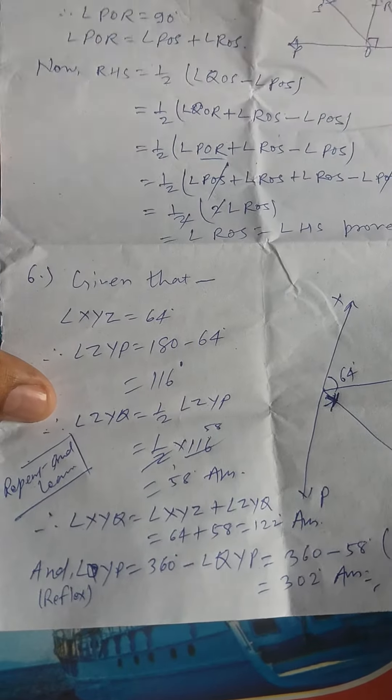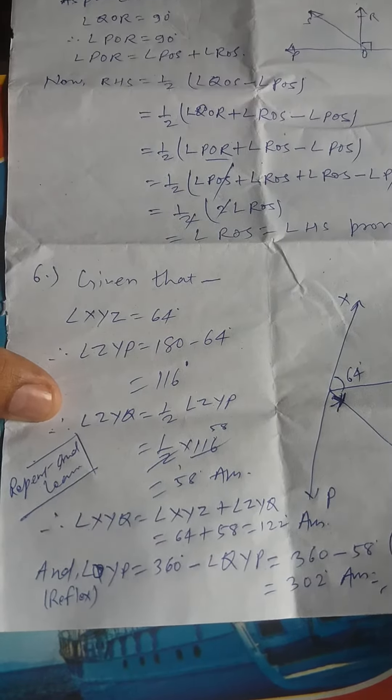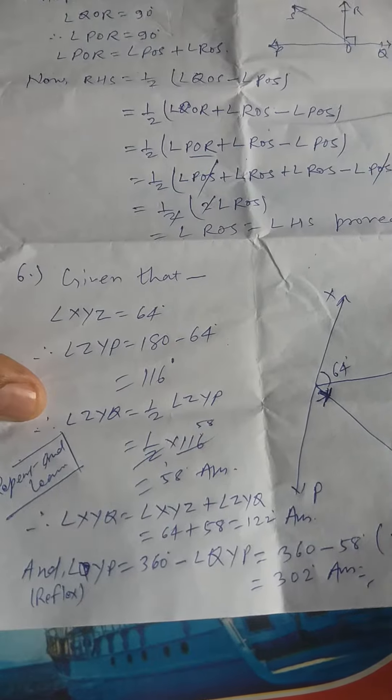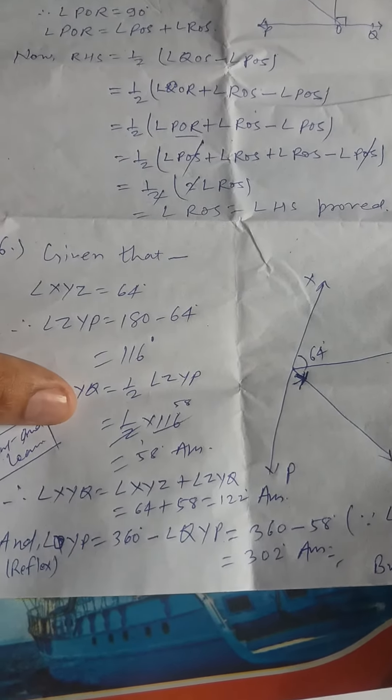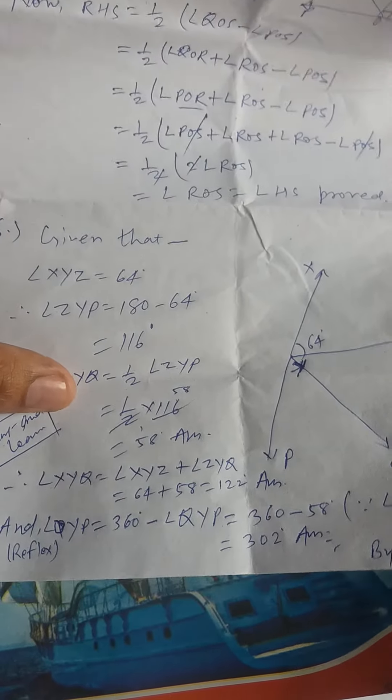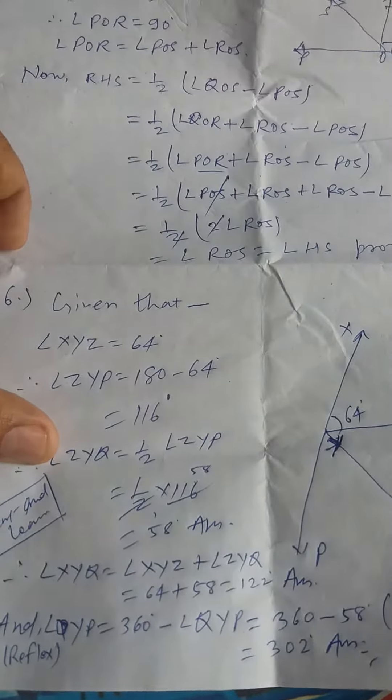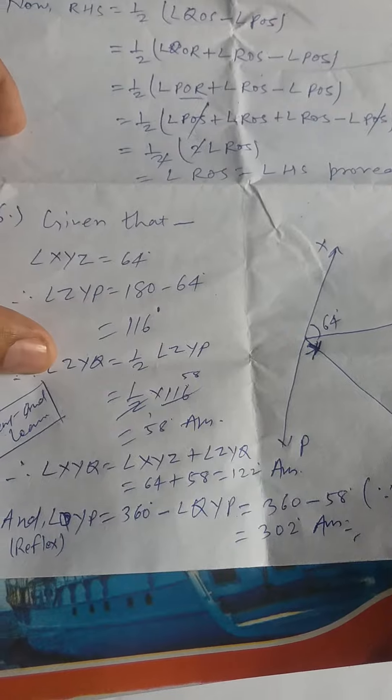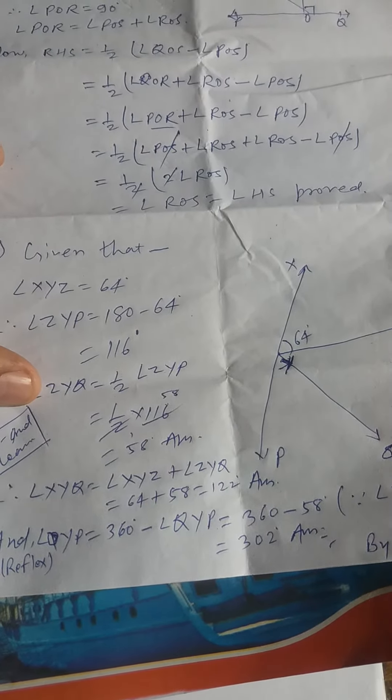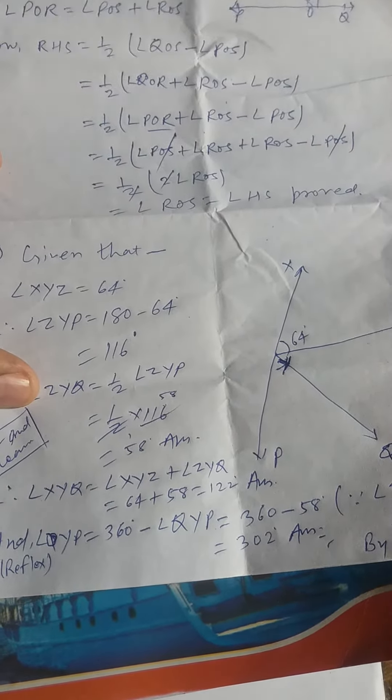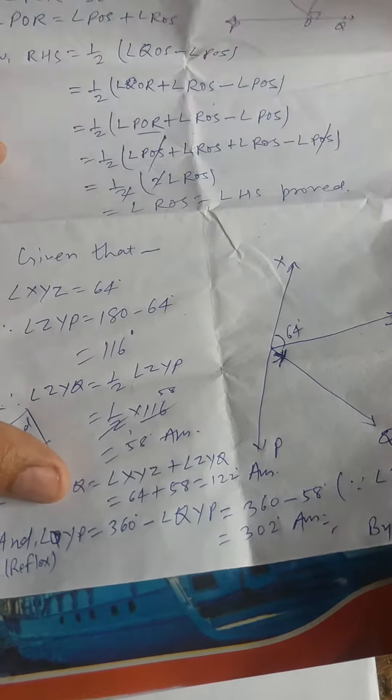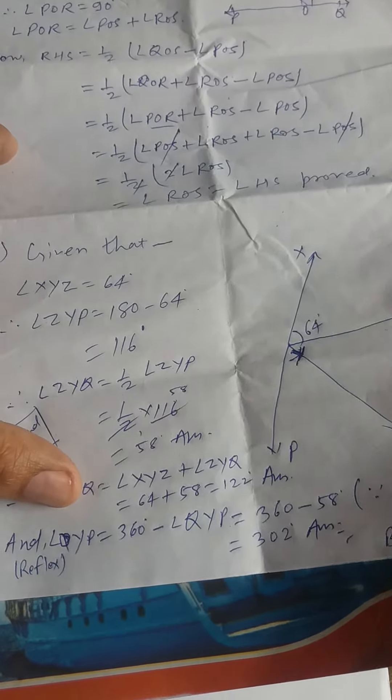Angle ZYE equals 1/2 times 116, which equals 58. So angle XYQ equals angle XYZ plus angle ZYE, which equals 64 plus 58, which is 122 degrees.